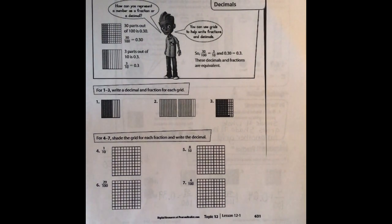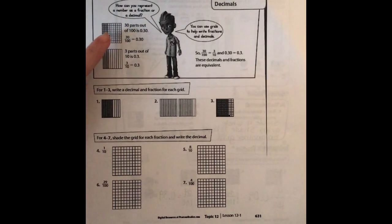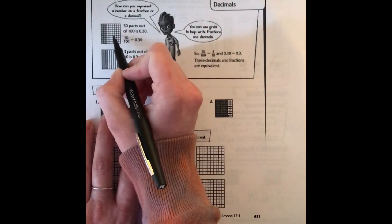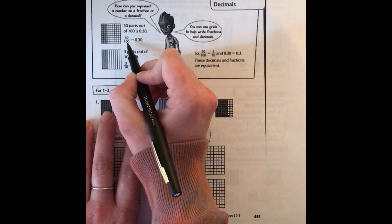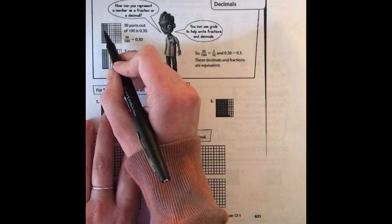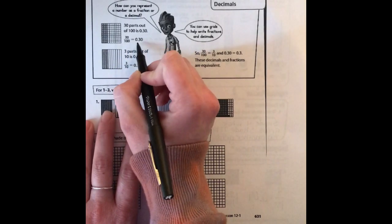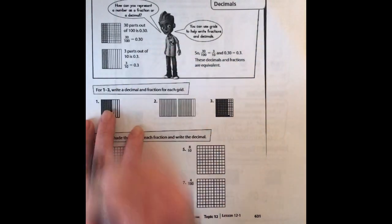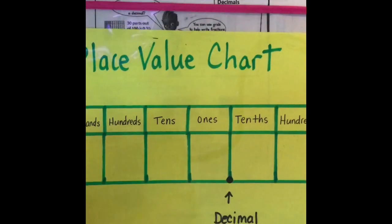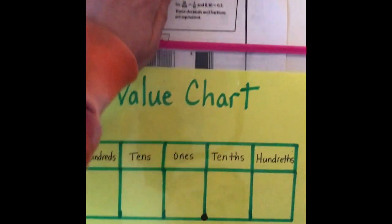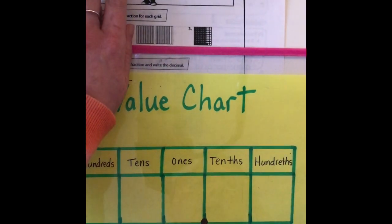Here is the homework and practice page for 12-1. Up here is some useful information about how to look at the grids and it explains how we get the decimal. Here we have 100 parts — 100 being our denominator — and there are 30 individual squares filled in, which gives us the fraction 30 over 100. We can make that a decimal by writing 0.30, and this place value chart I made is helpful in explaining it.